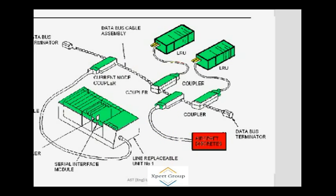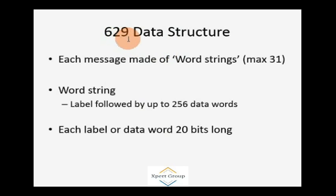ARINC 629 data structures: each message is made of a word string with a maximum of 31 bits. The word string label is followed by up to 256 data words. Each label or data word is 20 bits long. Thank you very much for watching this video. I hope you have gotten good information about data buses, especially ARINC 429 and ARINC 629. Share your ideas and comment on our videos for improving ourselves. Keep watching our video series.